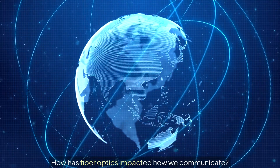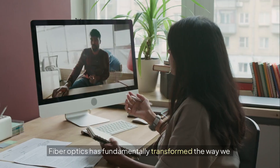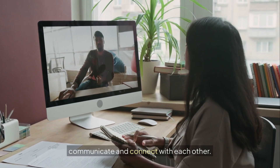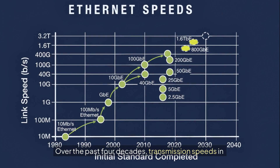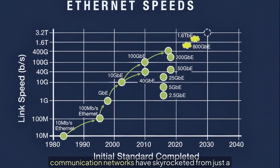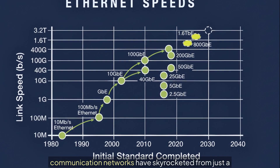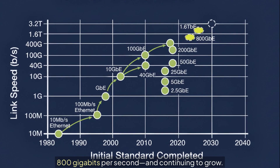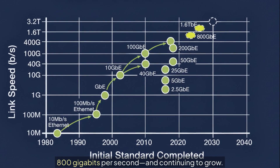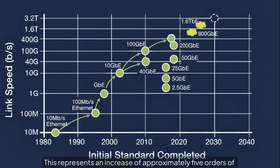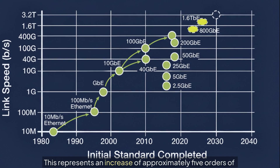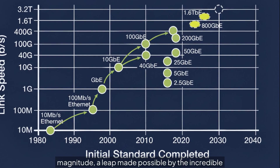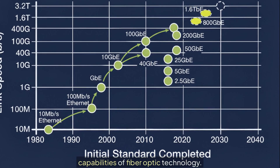Fiber optics has fundamentally transformed the way we communicate and connect with each other. Over the past four decades, transmission speeds have skyrocketed from just a few megabits per second in the 1980s to an astounding 800 gigabits per second and continuing to grow. This represents an increase of approximately five orders of magnitude, a leap made possible by the incredible capabilities of fiber-optic technology.